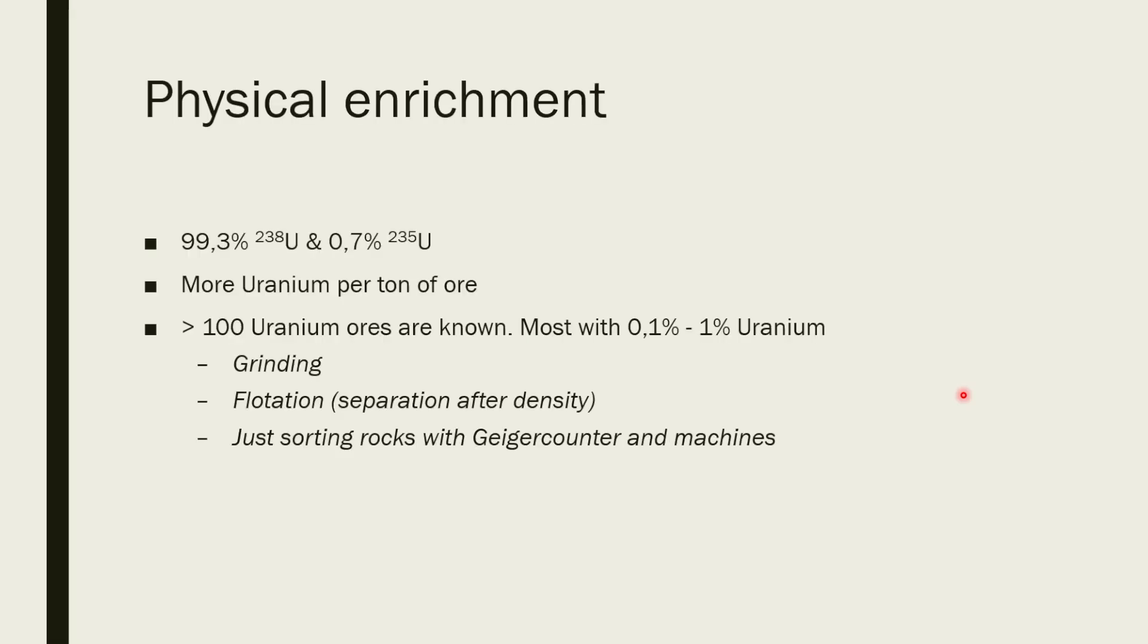So if you look at the natural uranium, you will find that 99.3% is the boring uranium-238 isotope. Only about 0.7% is the exciting uranium-235 isotope.